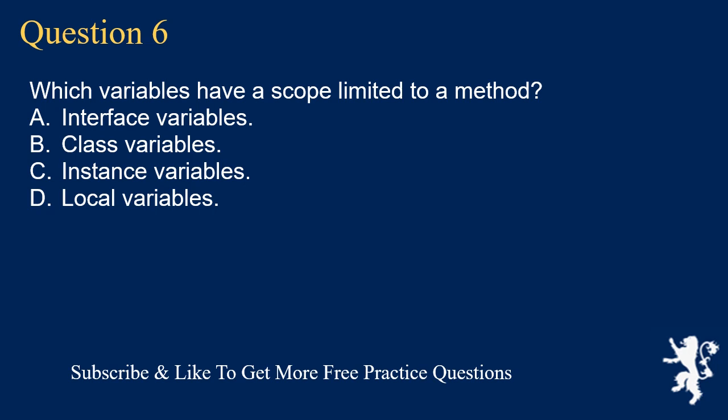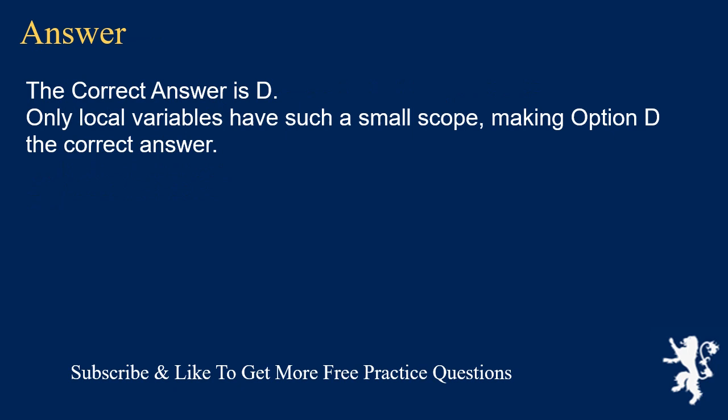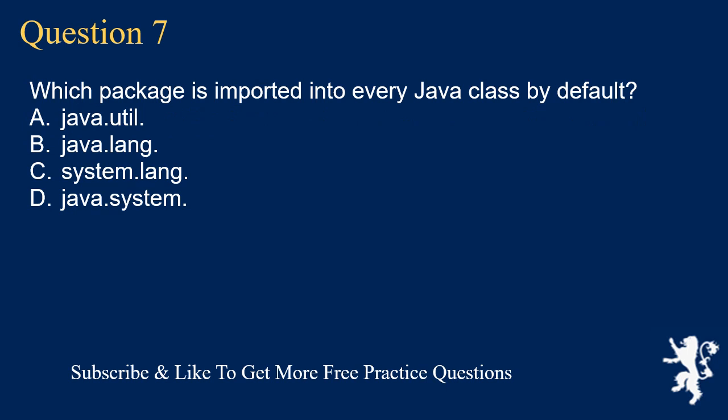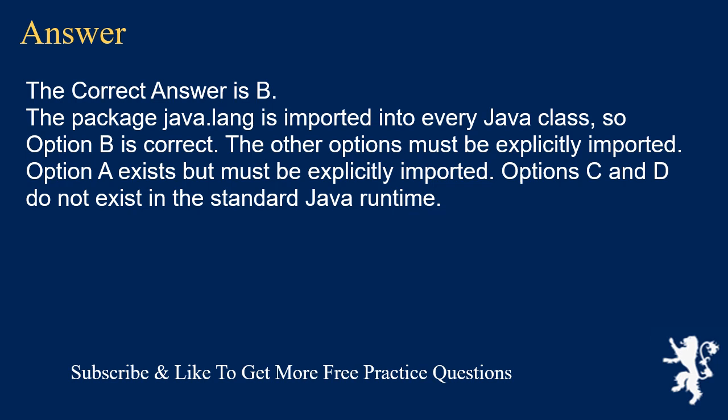Question 6: Which variables have a scope limited to a method? A) Interface variables, B) class variables, C) instance variables, D) local variables. The correct answer is D. Only local variables have such a small scope. Question 7: Which package is imported into every Java class by default? A) java.util, B) java.lang, C) system.lang, D) java.system. The correct answer is B. The package java.lang is imported into every Java class. Option A exists but must be explicitly imported. Options C and D do not exist in the standard Java runtime.